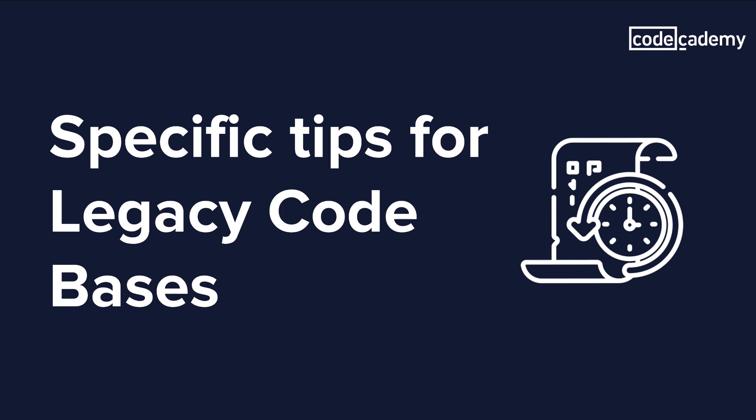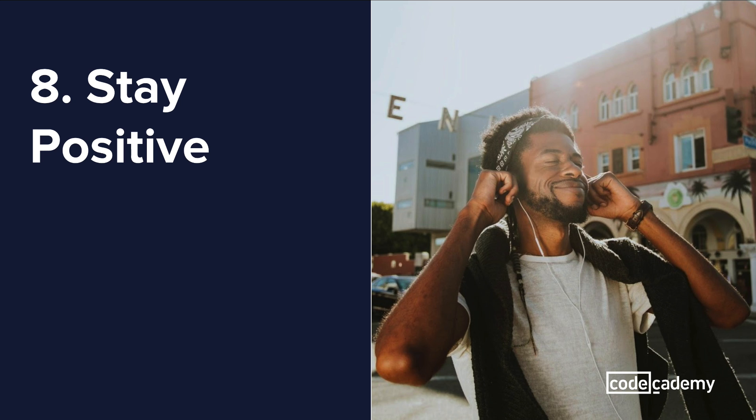For the last three tips, these are going to be specific to legacy code bases. All the tips before this could be applied to any code base, but these three are specific for legacy code. Number eight is to stay positive. When working with legacy code bases, it's very easy to become bitter and negative towards the developers who wrote it. It's always important to just stay positive and understand that it's not the end of the world. If the code is poorly written, you can actually make quite a difference by taking the time to fix some of the mistakes.